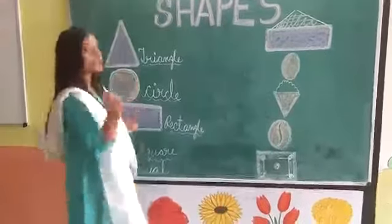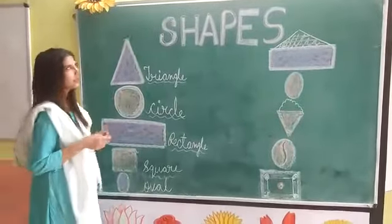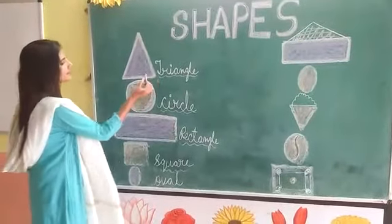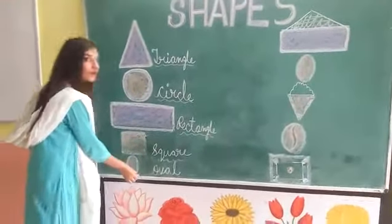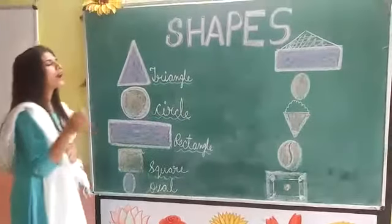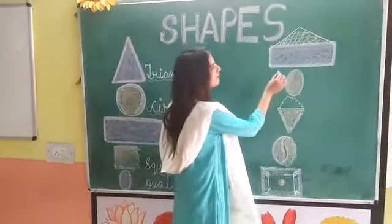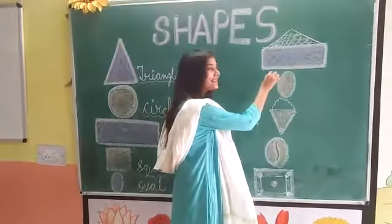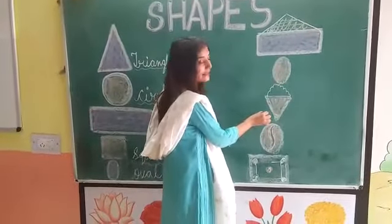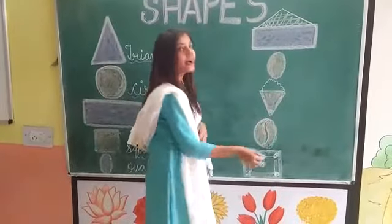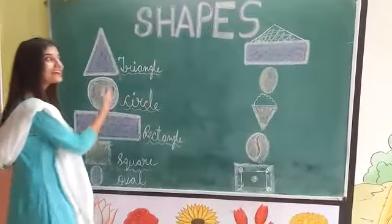So let's start. On one side I have drawn some shapes as you can see. The shapes are triangle, circle, rectangle, square, and oval. And today on another side I have drawn some figures. The figures are heart, egg, ice cream, ball, and carrom board. Help me to match shapes and figures.